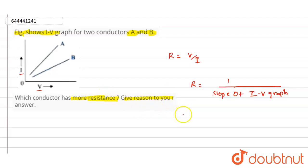According to that, conductor B has more resistance when compared to conductor A. So conductor B is the correct answer for this question. Thank you.